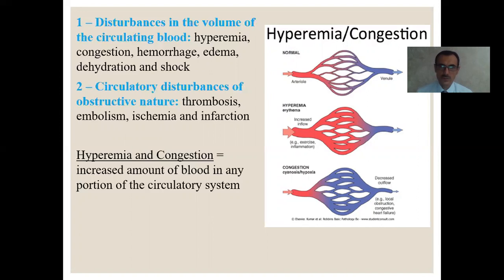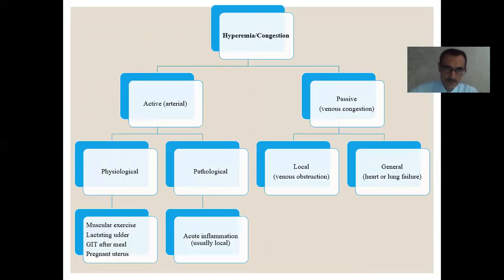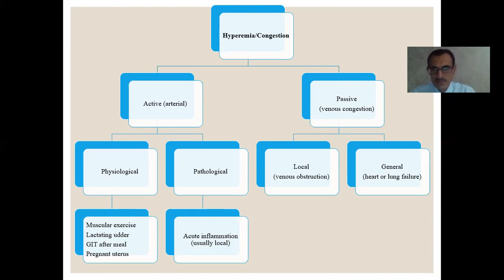First of all, we will discuss about the hyperemia, or the congestion — this is the increased amount of blood in any portion of the circulatory system. Hyperemia, or congestion, is divided into two groups: we call it the active, or arterial, and passive hyperemia, or the venous congestion.